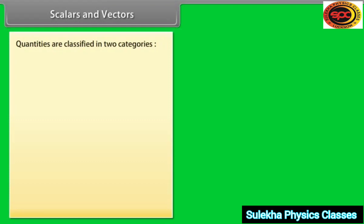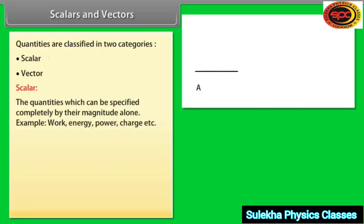In physics, quantities are classified in two categories. They are A. Scalar and B. Vector. Scalar: the quantities which can be specified completely by their magnitude alone. For example, work, energy, power, charge, etc.